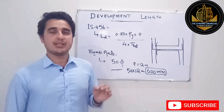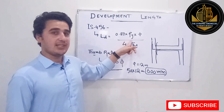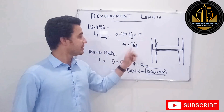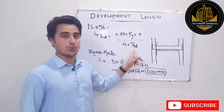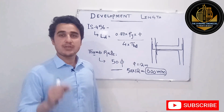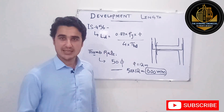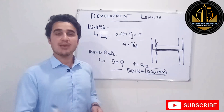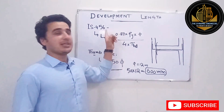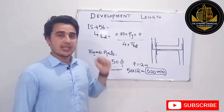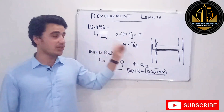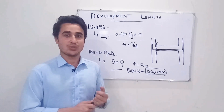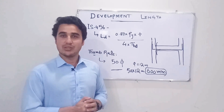Development length of any bar depends upon its strength, its diameter, and the concrete used. Whether you are using 4000 psi, 6000 psi, M25, M30, or M35 concrete — the development length depends on the type of concrete as well. I hope you liked this video and learned something from it. Don't forget to subscribe to our channel so that you may get other videos as well. Thank you.